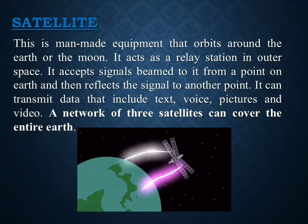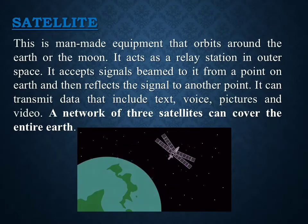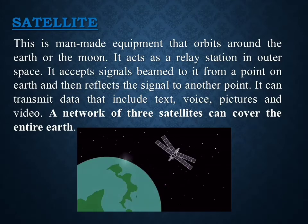A satellite is a man-made device that orbits around the earth. It acts as a relay station in space, accepting signal beams from a point on earth and reflecting them to another point. It can transmit data including text, voice, pictures, and video. A network of just three satellites can cover the entire earth, and there are hundreds of satellites in space right now orbiting the earth and relaying information back to us.